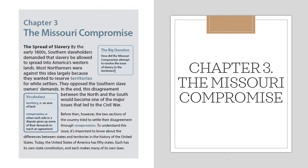Before then, however, the two sections of the country tried to settle their disagreement through a compromise. To understand this issue, it's important to know about the differences between states and territories. Today the United States has 50 states. Each state has its own constitution and makes many of its own laws.